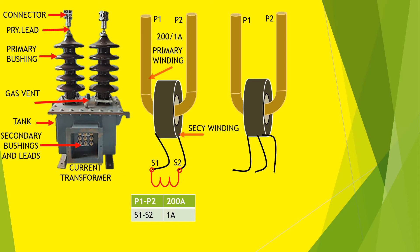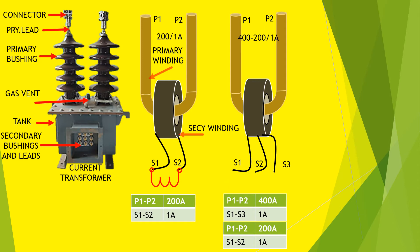Here the rating is 400/200 by 1 ampere. That means the magnitude of normal current along P1 and P2 is either 400 ampere or 200 ampere, and depends on shorting either of S1 and S3, or of S1 and S2. If shorting is done between S1 and S3, then 400 ampere normal current will be allowed along P1 and P2. If shorting is done between S1 and S2, then 200 ampere normal current will be allowed.